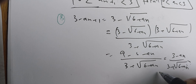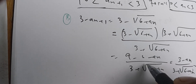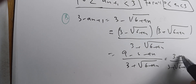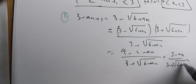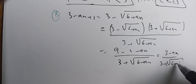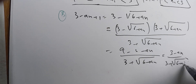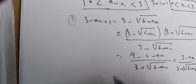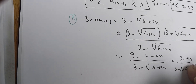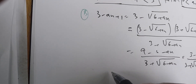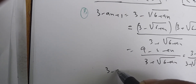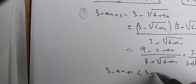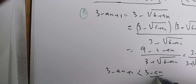Since aₙ ∈ (0, 3), the term (3 − aₙ) is positive and the denominator (3 + √(6 + aₙ)) is greater than 3. Therefore 3 − aₙ₊₁ = (3 − aₙ)/(3 + √(6 + aₙ)) < (3 − aₙ)/3, which is the key inequality.